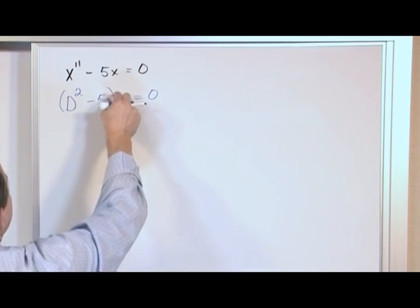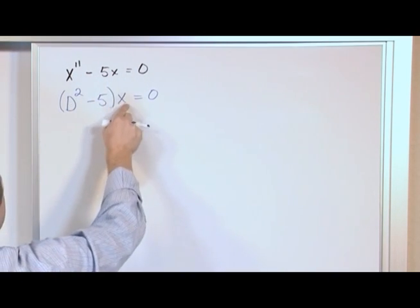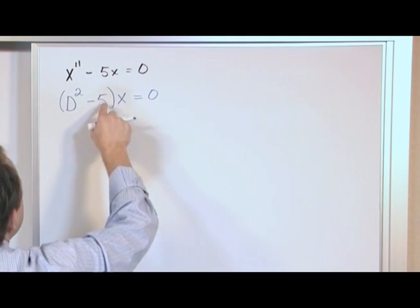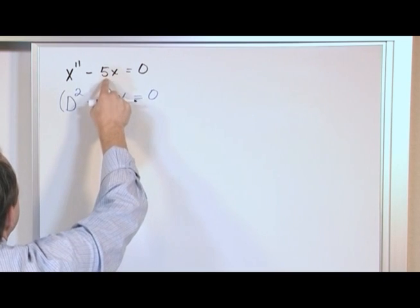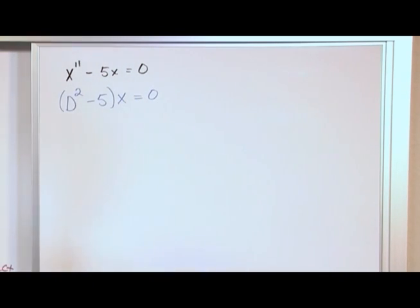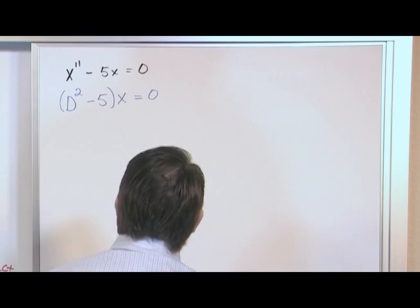You should be able to convince yourself that this is equivalent operator notation from what we have above. If you multiply x in here, D² would be operating on x, giving us the second derivative, because D² is a second derivative, minus 5 distributed gives 5x equals zero. It's just pulling it out and arranging it like that.